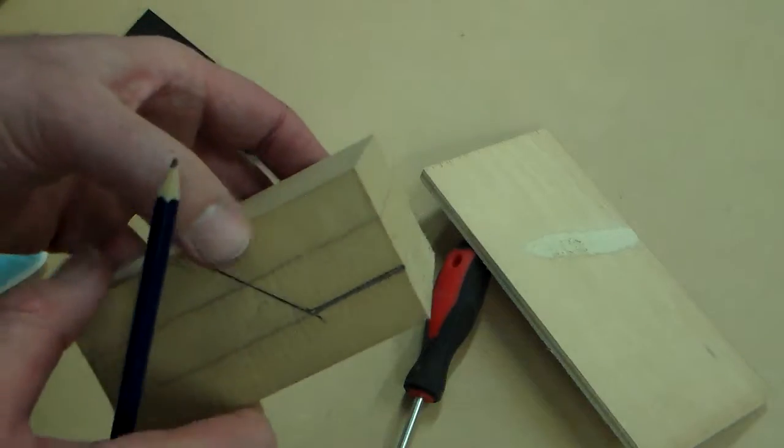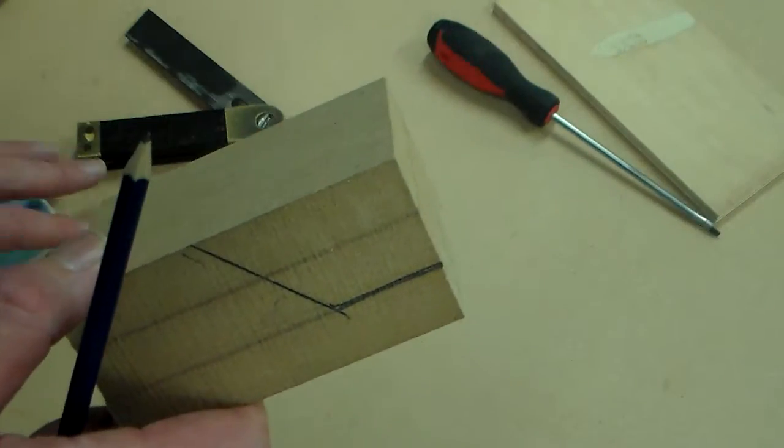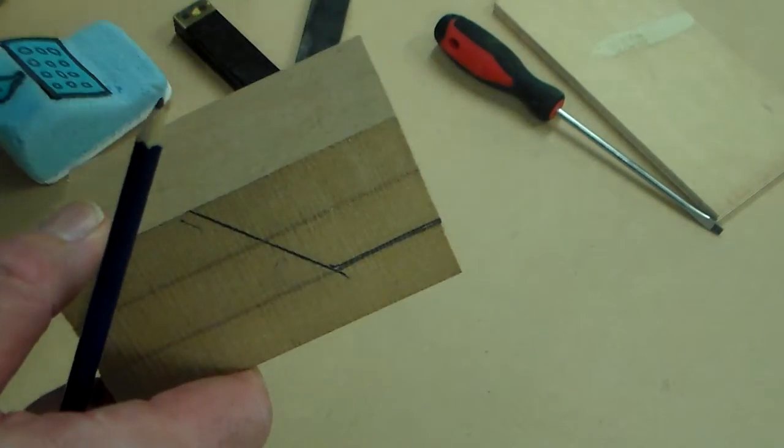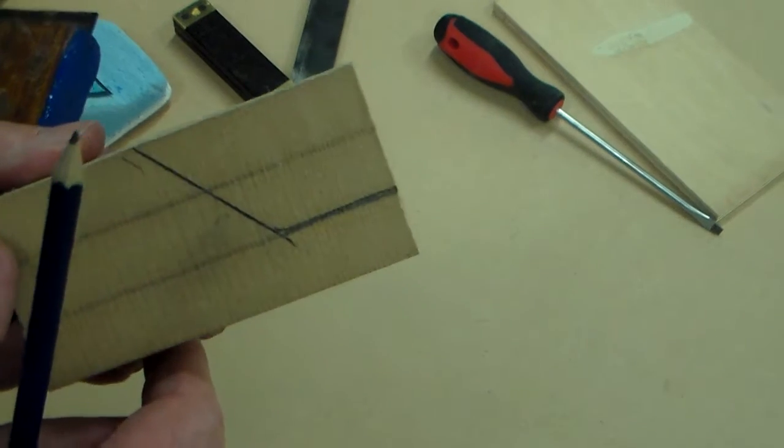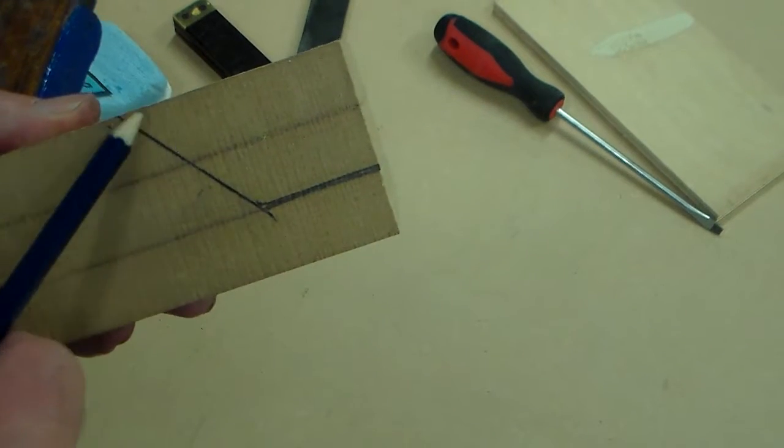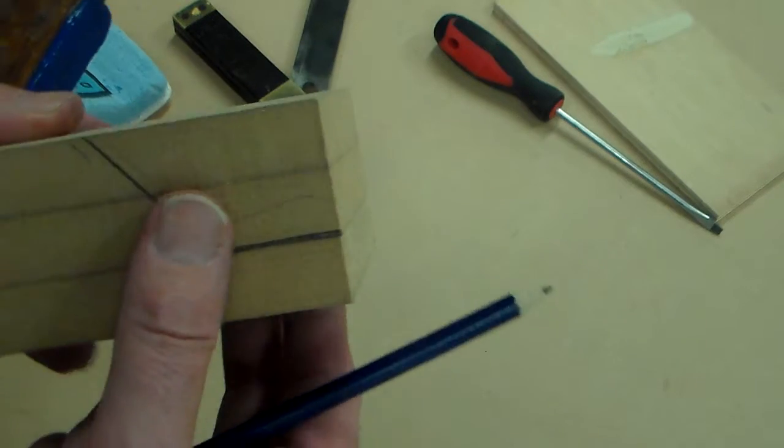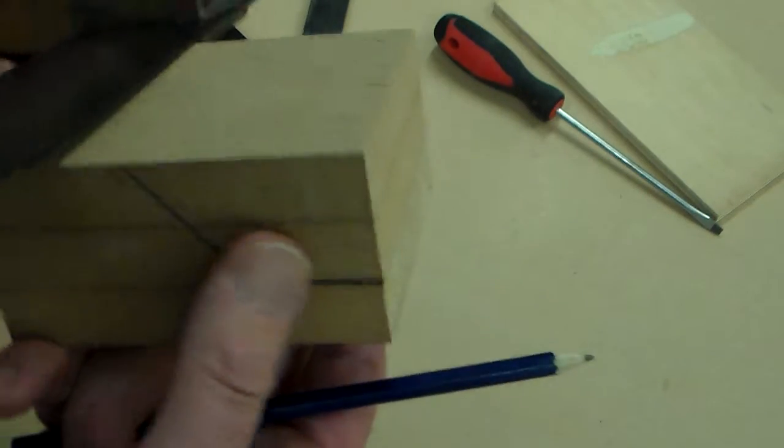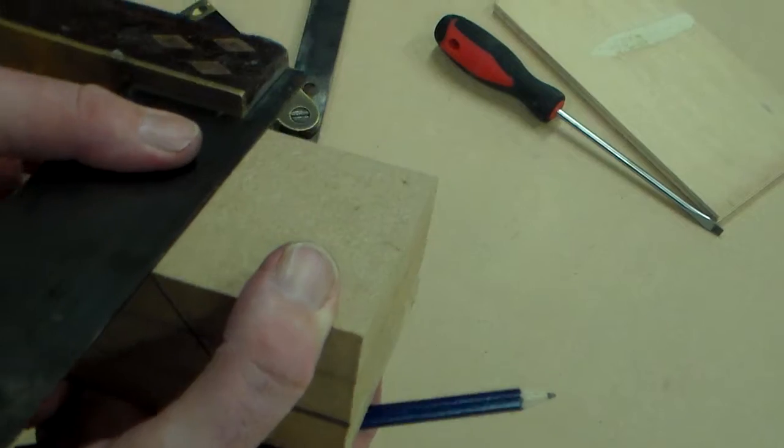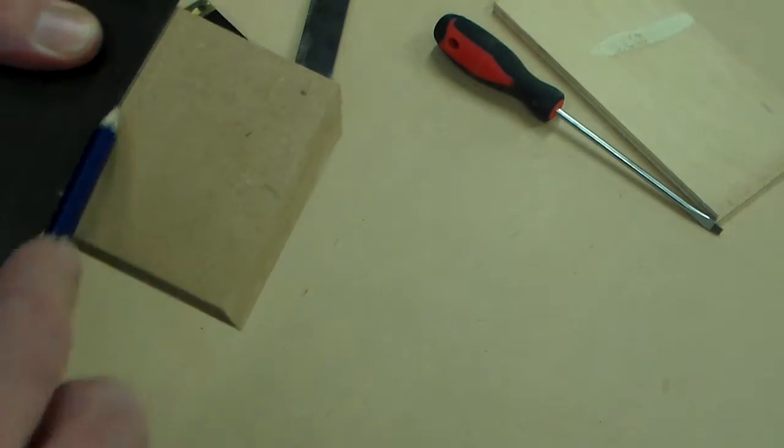But our problem now is that we need to remove this. Now the easiest way would be to get the technician or the teacher to use the bandsaw to cut this out. But we're going to have a go at cutting this out. Some of them are easier than others, so some are going to be more difficult, depending on your shape.